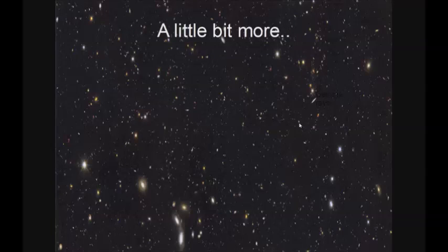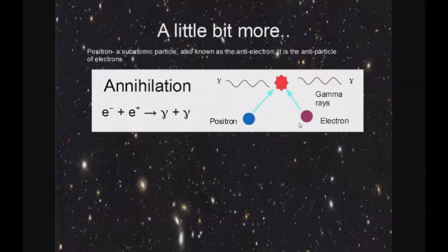Positrons are subatomic particles, also known as anti-electrons. They are the antiparticle of electrons, meaning they have the properties of an electron except for the fact that they are positively charged. Furthermore, when an electron collides with a positron, they will both be annihilated — converted to other forms such as gamma rays. This image shows annihilation.